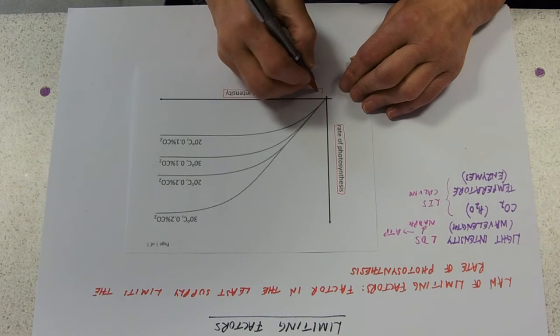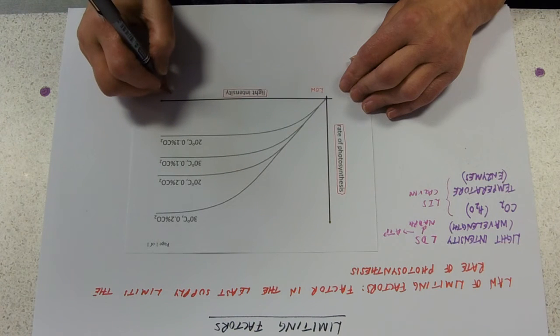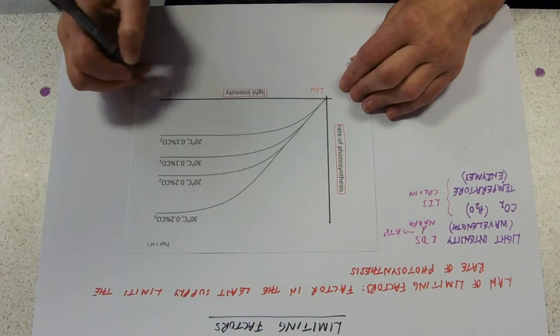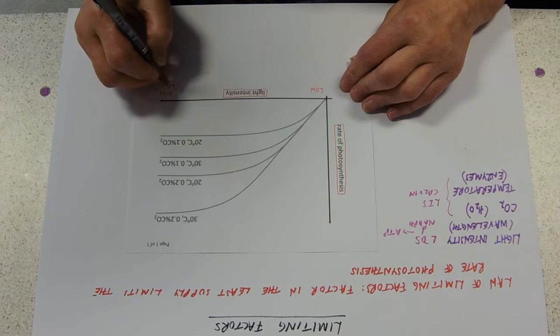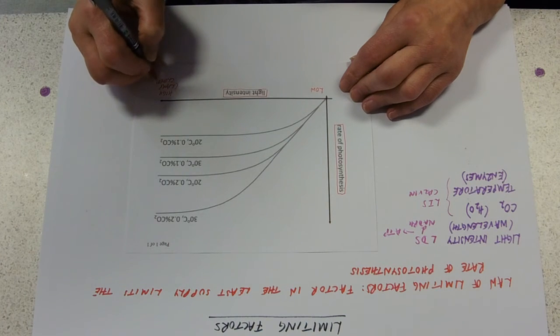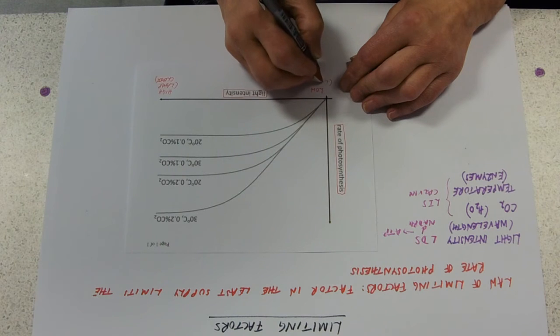This is low light intensity and this is high light intensity over here. This would mean the lamp is closer to the plant, and this would mean the lamp is further away.